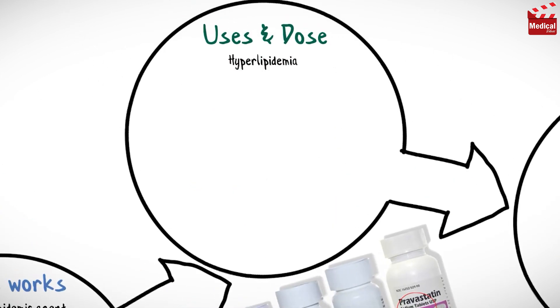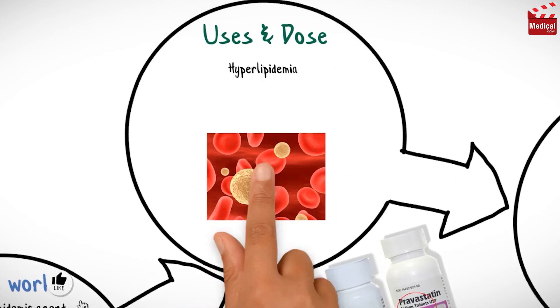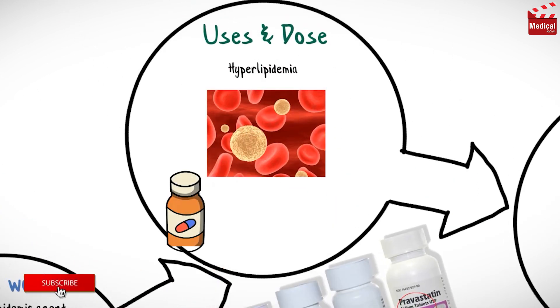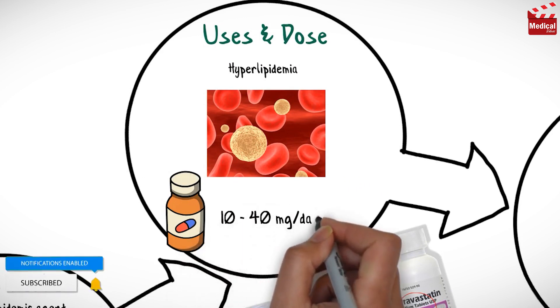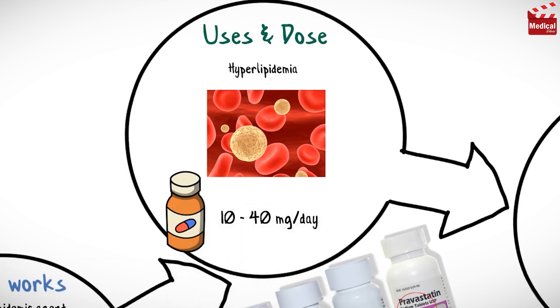Pravastatin is used for hyperlipidemia. The usual dosage of pravastatin for adults is 10–40mg per day.